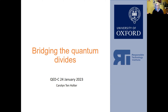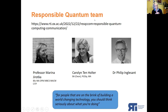We talk to industry and to policy. We're very concerned with investigating the ways in which quantum computing might impact varieties of communities across societies. The title — Bridging the Quantum Divides — is taken from a paper I'll discuss shortly. I'll start by introducing the team here at Oxford. We all work on responsible quantum and we've just started a new project looking at responsible communication around quantum computing. We're all very aware of the problems of hype.